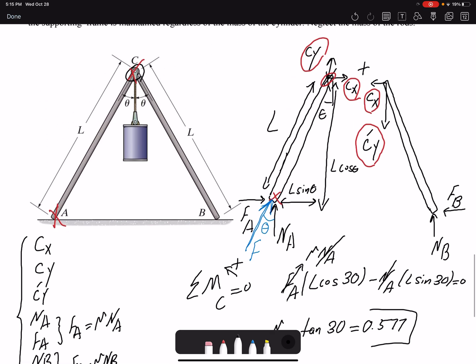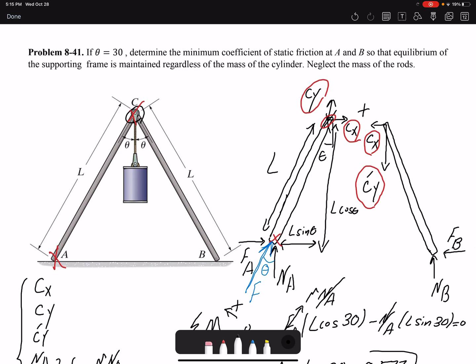So we use the definition of a two-force member to identify that we don't have - we don't know NA or FA, but we know at the end they have to be towards the member.